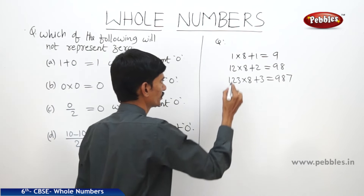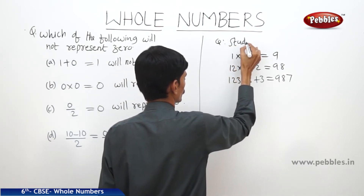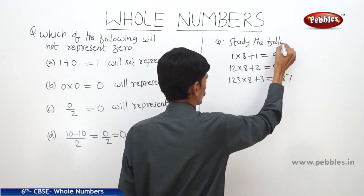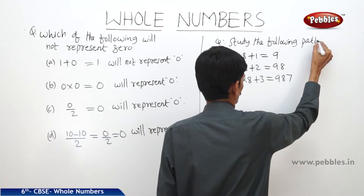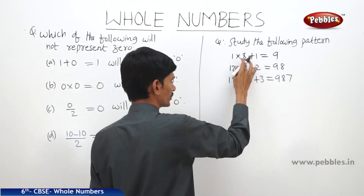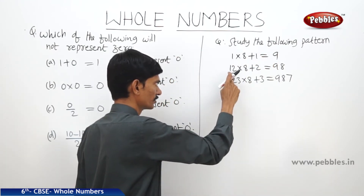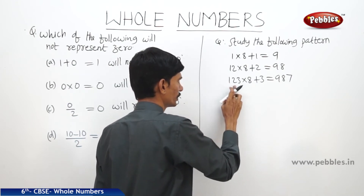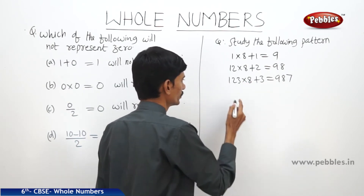The next question says: study the following pattern. We have 1 into 8 plus 1 equals 9; 12 into 8 plus 2 equals 98; 123 into 8 plus 3 equals 987. Write the next 4 steps.